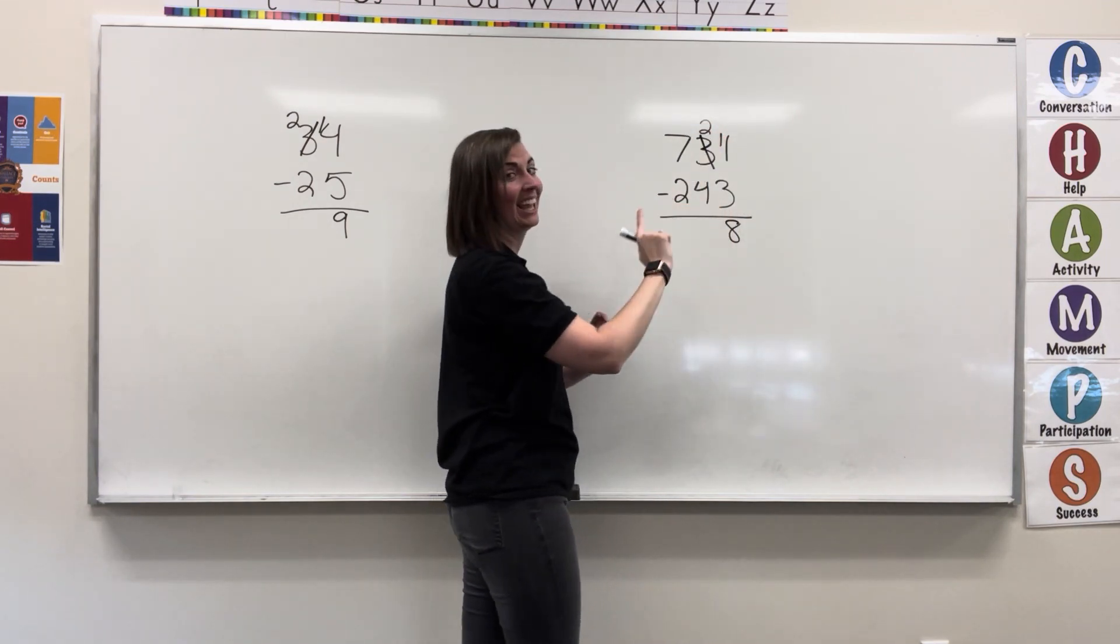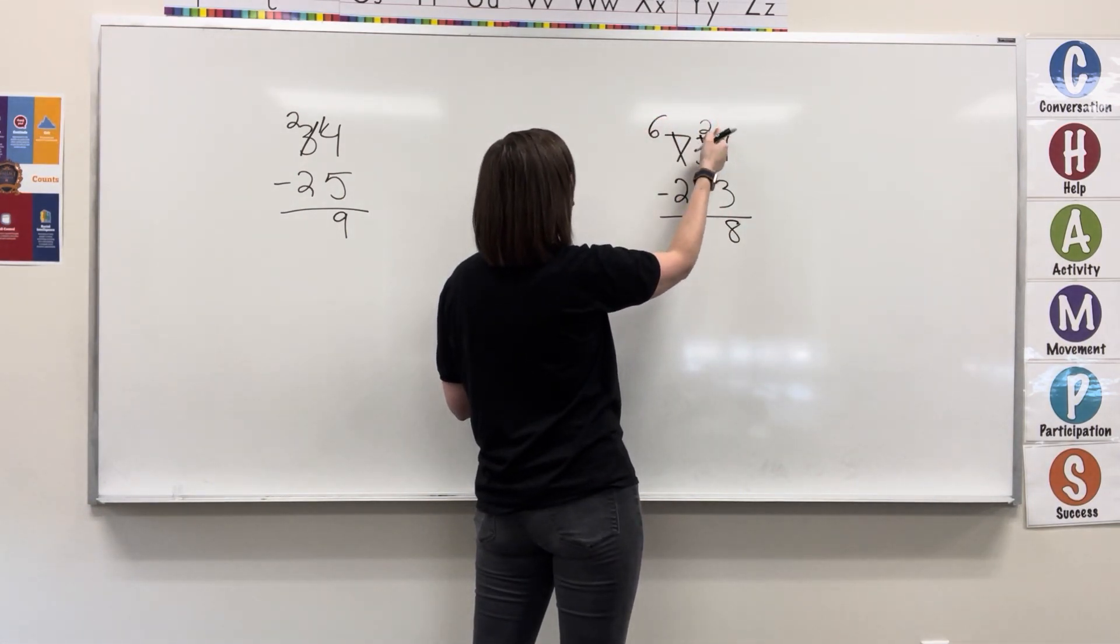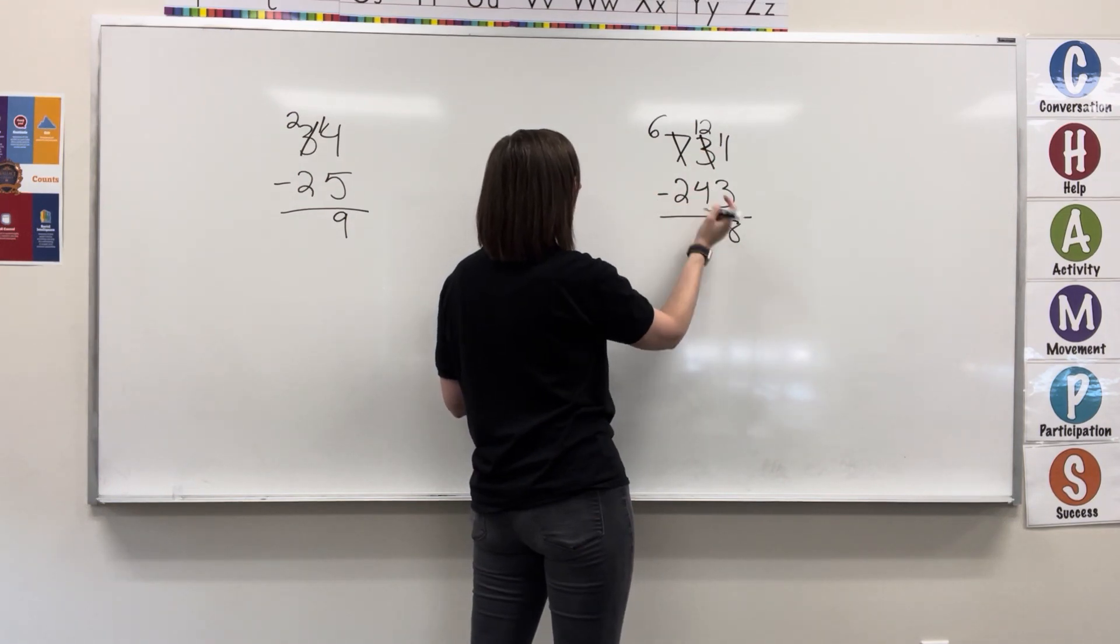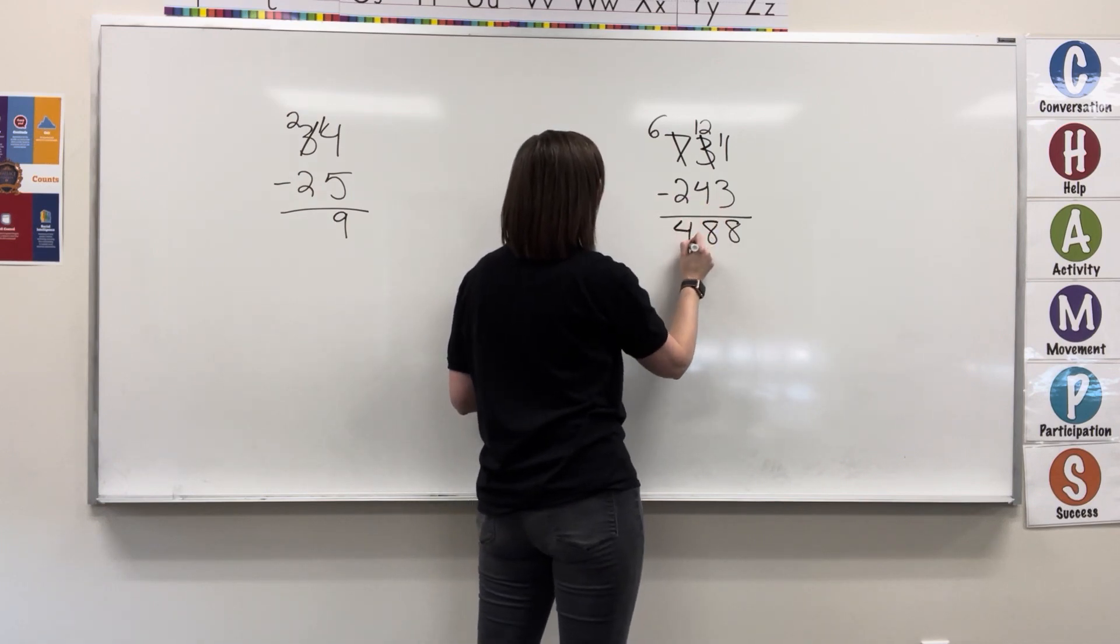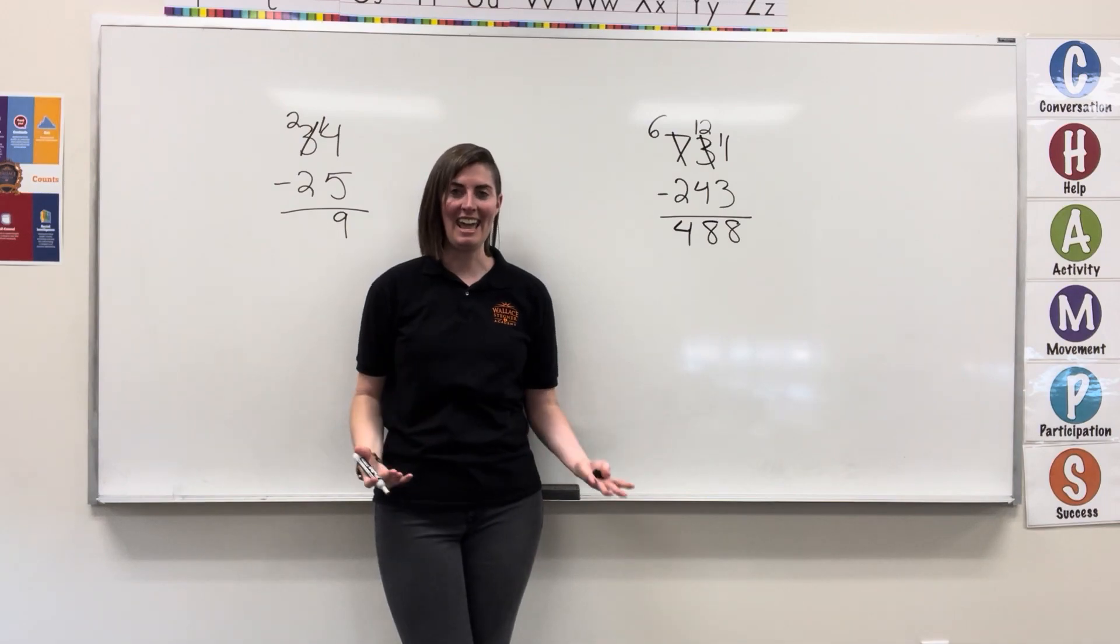2 minus 4, can't do it, go next door. 7 becomes 6, 2 becomes 12. 12 minus 4 equals 8. 6 minus 2 equals 4, write the 4, so here we have 488.